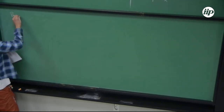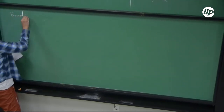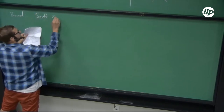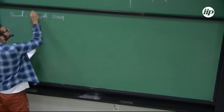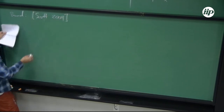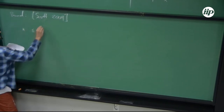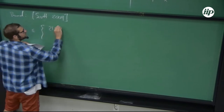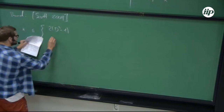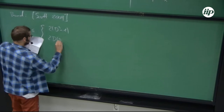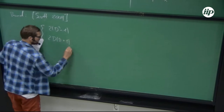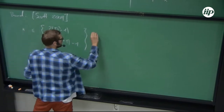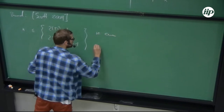We immediately have a bound on these kinds of states, namely by Scott around 2004. For them to exist, the necessary requirements are 2(d²−1) and 2d(d+1)−1 for even and odd N respectively.